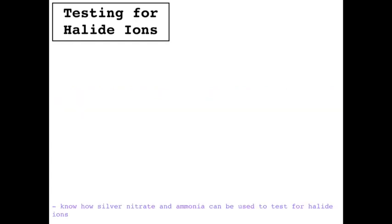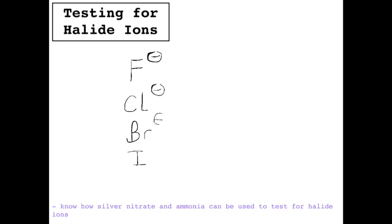What I mean by halide ions is the ions of the halogens: fluorine, chlorine, bromine, and iodine. Astatine would also be there but we don't really test for that. The halide ions are F⁻, Cl⁻, Br⁻, and I⁻, and they form these when they're in solution.